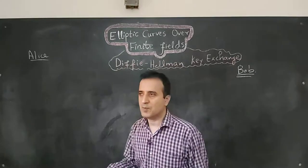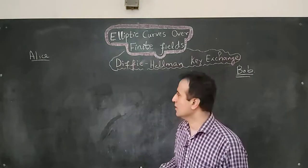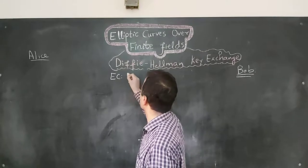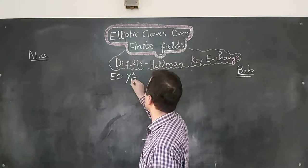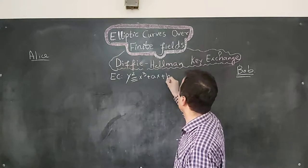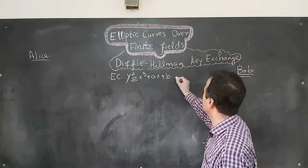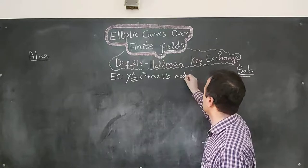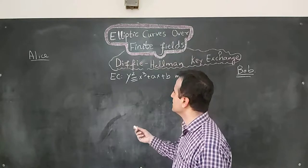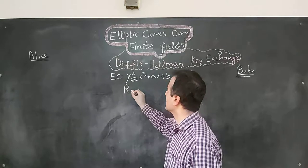In the start, Alice and Bob negotiate some public parameters. These parameters include the equation of the elliptic curve, the finite field on which that elliptic curve is defined, and a point on the elliptic curve that acts as a generator of that curve. Let's say that point is R.